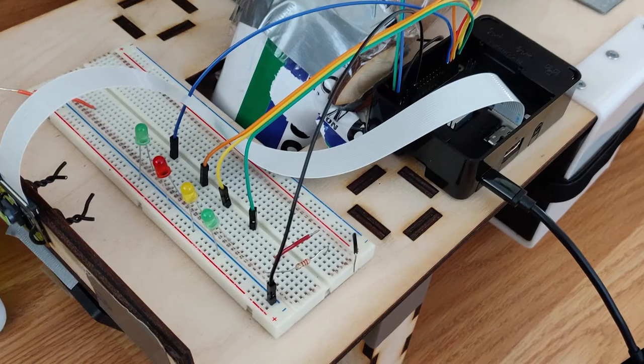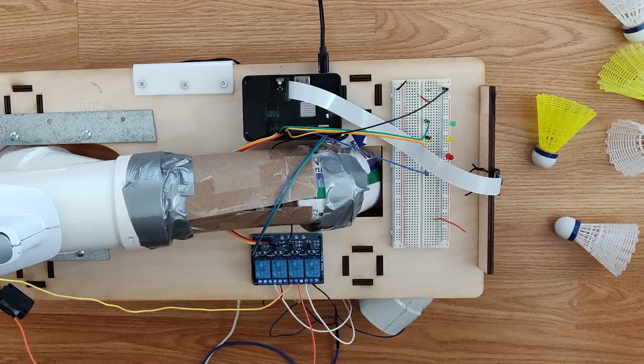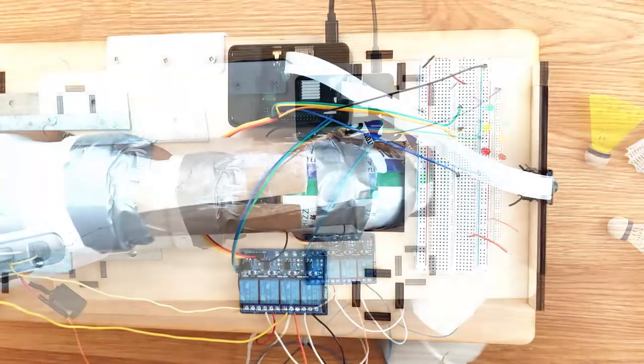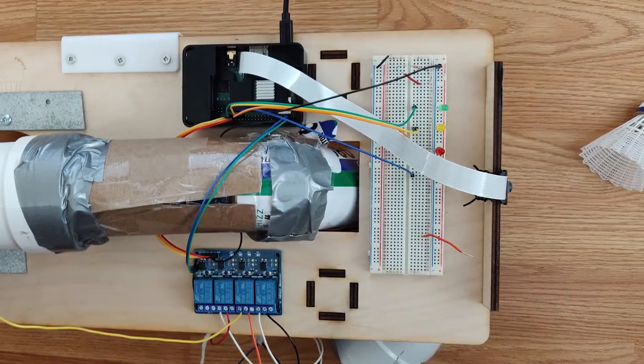BirdieBot utilizes a camera and Raspberry Pi to detect the shuttlecock. If the shuttlecock is not isolated, a strong fan will blow away the shuttlecocks. If it is isolated, BirdieBot will determine if it is in the correct orientation.